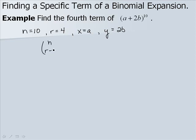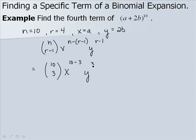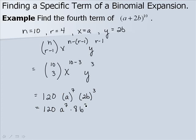With x equal to a and y equal to 2b, our formula gives n choose r minus 1 times x to the n minus (r minus 1) times y to the r minus 1, which is 10 choose 3 times a to the 7th times 2b to the 3rd. 10 choose 3 equals 120. Raising 2b to the 3rd gives 8b to the 3rd. Multiplying 120 by 8, we get 960 a to the 7th b to the 3rd.